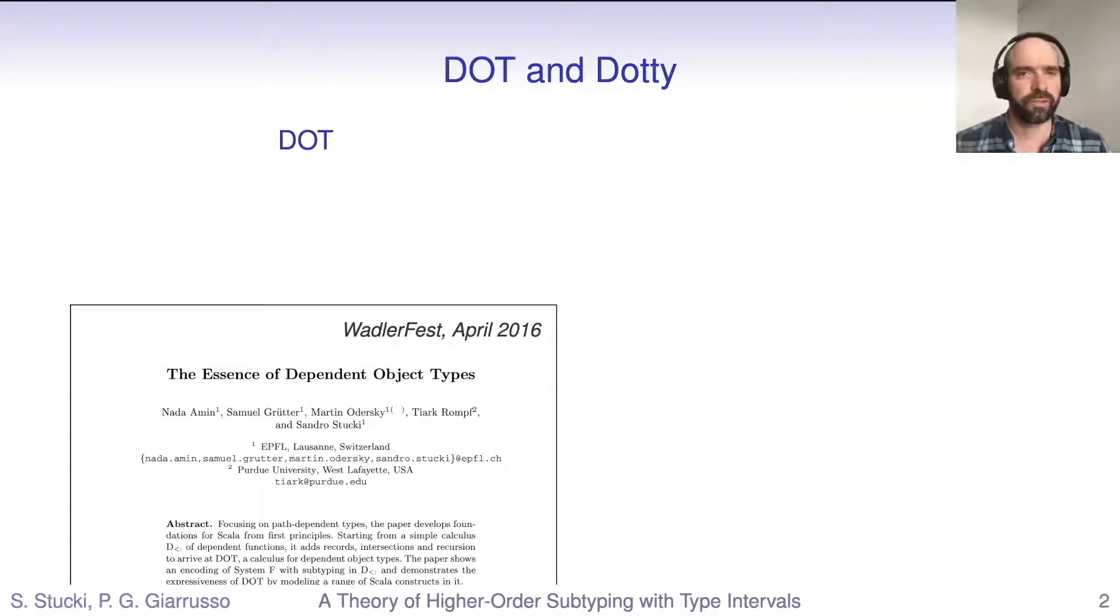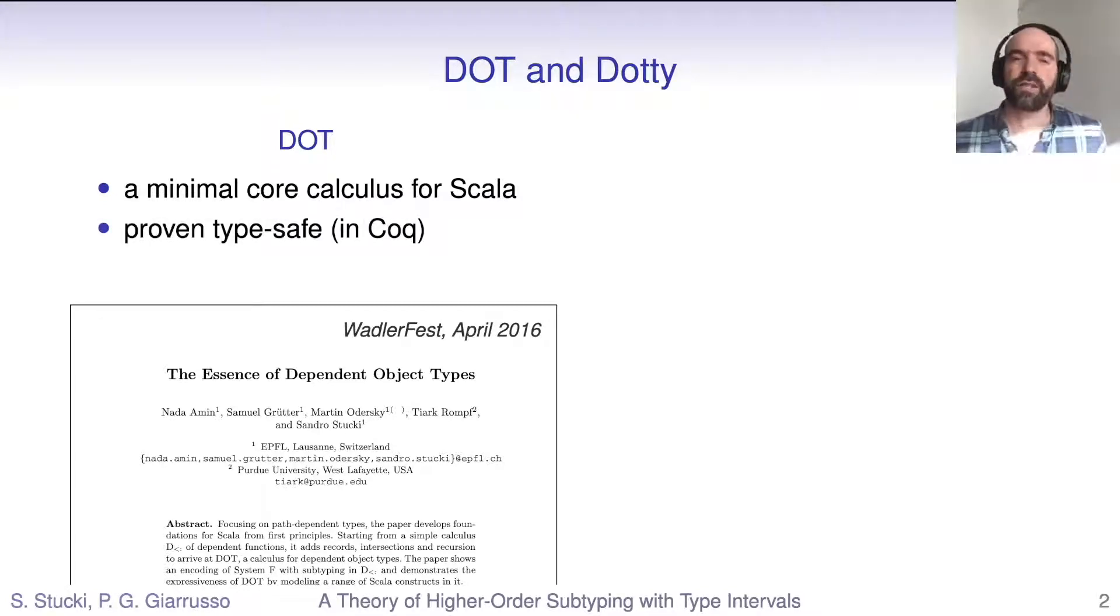For the better part of two decades, Martin Odersky and his team had been working on solid theoretical foundations for the Scala language. And they were about to make a breakthrough with the dot calculus, a minimal core calculus for Scala's type system. Dot had already been in the making for a few years, but it wasn't until the end of 2015 that the proof of type safety really came together.